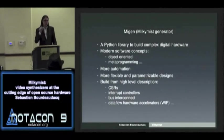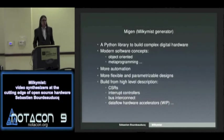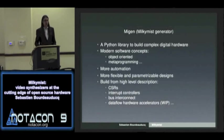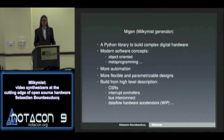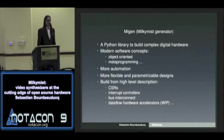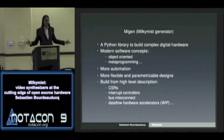For example, using Migen you can just give a list of signals to be treated as interrupt sources, and it will automatically connect them to the CPU and generate registers for enabling, status, and masking of interrupts — automatically, without typing all that code. It can also generate bus interconnect automatically. Right now, connecting several peripherals with a Wishbone bus in Verilog or VHDL requires a lot of manual coding. With Migen, using object-oriented capabilities, you just give a list of master bus objects and a list of slave objects and it automatically interconnects everything.